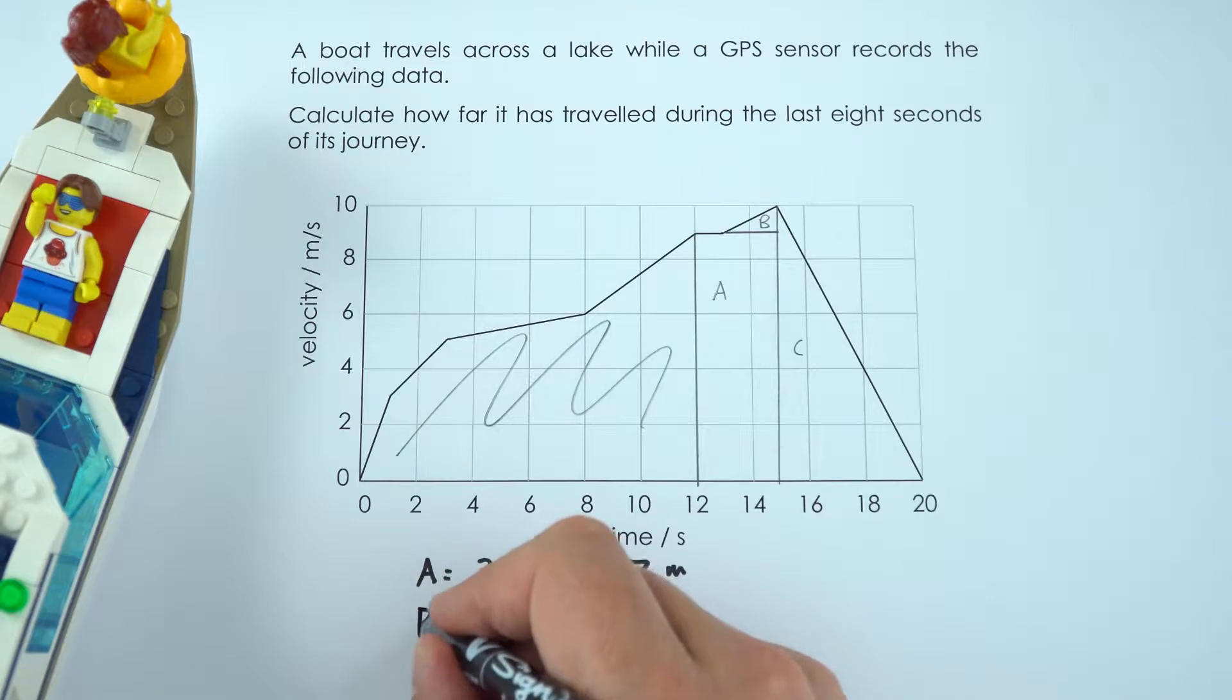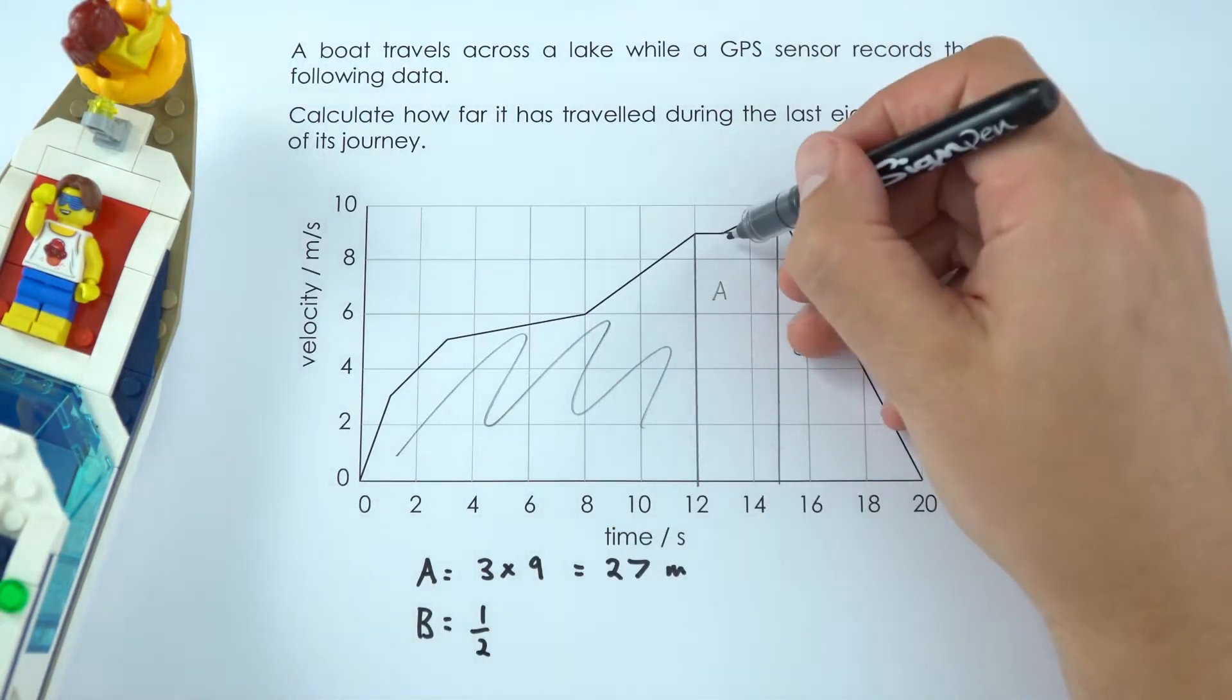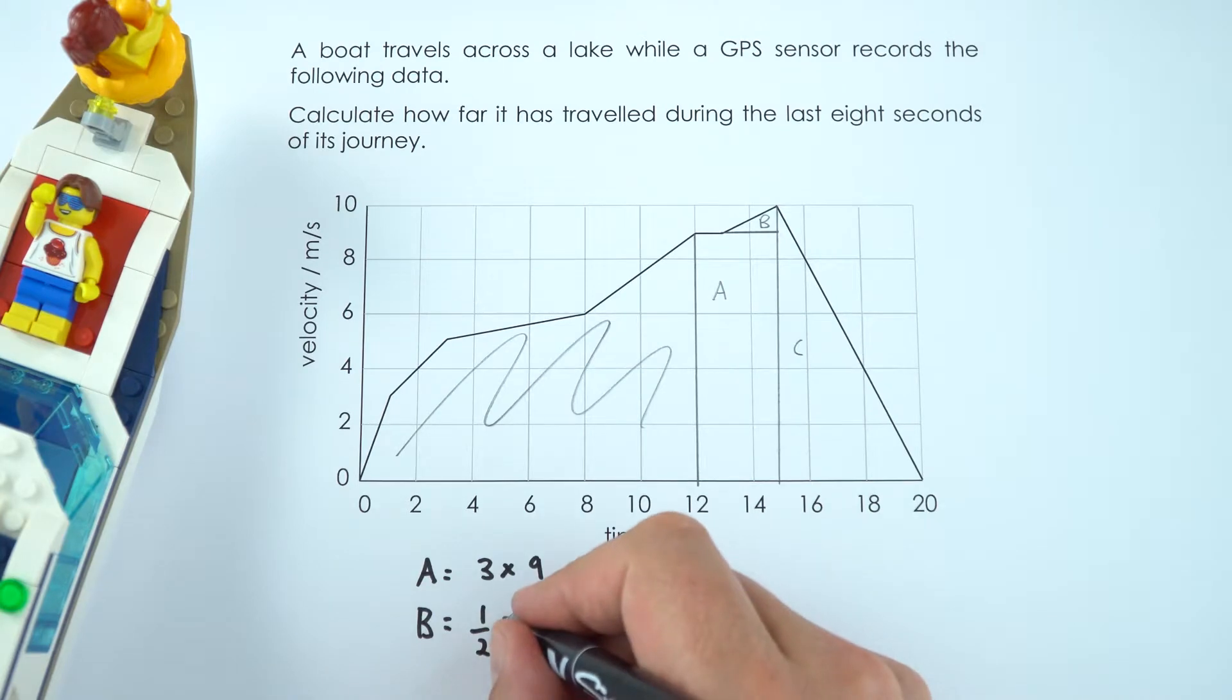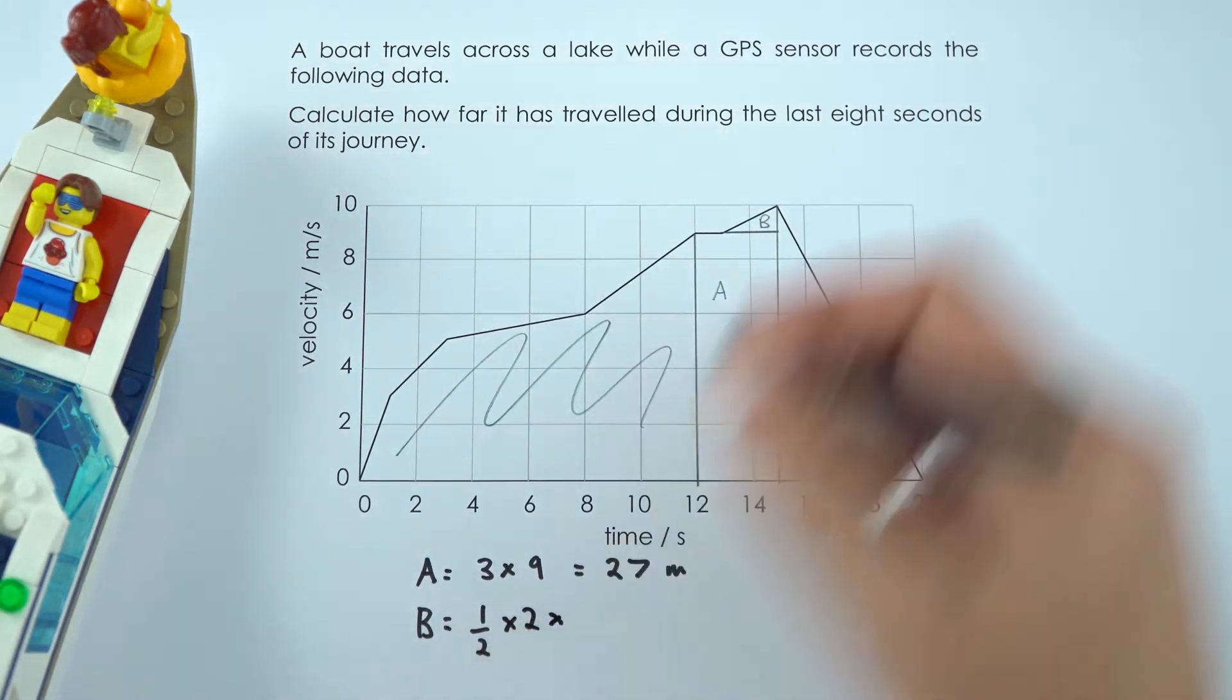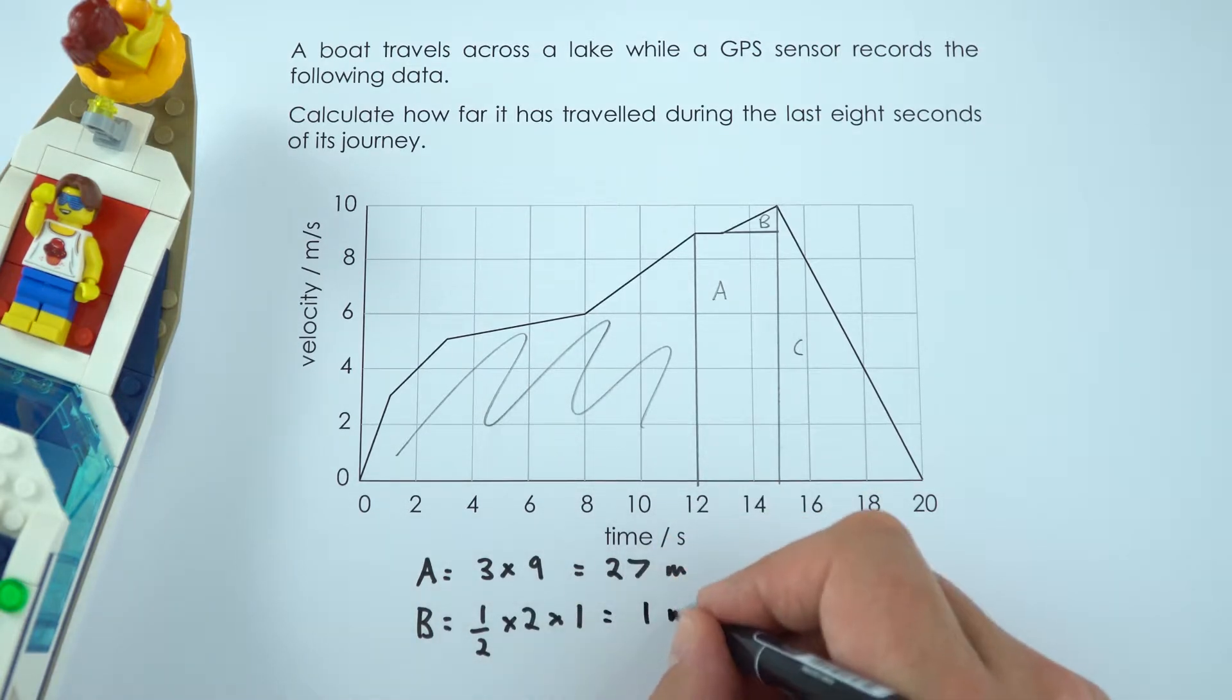Area B is a little bit more tricky. This is a triangle so it's going to be half base times height. Now the base goes from the midpoint between 12 and 14 which is 13 up to 15 so that's equal to 2 and the height goes from 9 to 10 so that's 1. So half times 2 times 1 well that's just 1 times 1 so that's 1 meter.